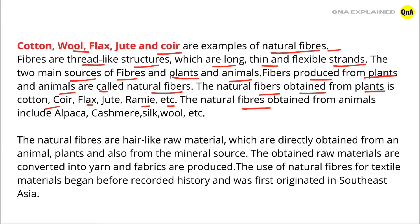The natural fibers obtained from animals include alpaca, cashmere, silk, wool, etc. The natural fibers are hair-like raw materials which are directly obtained from animals, plants and also from mineral sources.